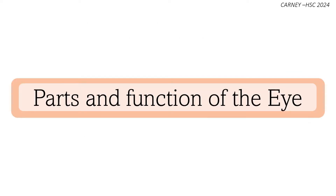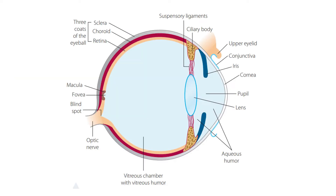The eye is a complicated organ made up of receptors called photoreceptors that take in light energy from the surrounding environment and transform it into electrical energy, known as nerve impulses. These impulses are then transmitted to the brain via the optic nerve, where they are processed into visual perception.